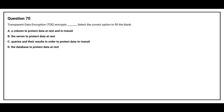Question 70: Transparent Data Encryption (TDE) encrypts blank space. Option A, a column to protect data at rest and in transit. Option B, the server to protect data at rest. Option C, queries and the results in order to protect data in transit. Option D, the database to protect data at rest. The correct answer is Option D, the database to protect data at rest.